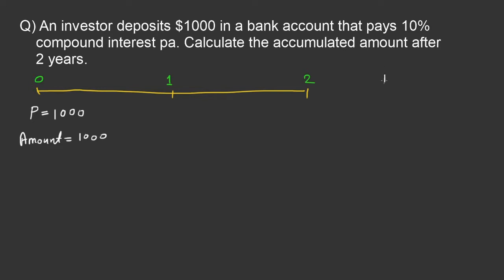We know the formula for interest for one period is I = P × R, where P is the principal and R is the rate of interest. Rate of interest is interest for $1. In the question, R is given as 10%, that is 10 for $100. I have to convert it into per dollar by dividing by 100, that is equal to 0.1.